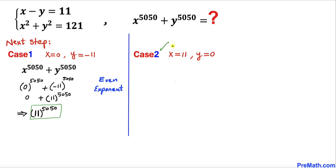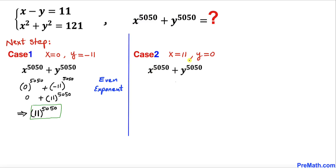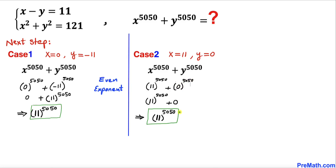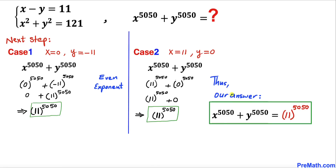Now for case 2, with x equals 11 and y equals 0, we find x to the power 5050 plus y to the power 5050 equals 11 to the power 5050 plus 0 to the power 5050, which equals 11 to the power 5050. The values are the same for both cases, so our final answer for x to the power 5050 plus y to the power 5050 is 11 to the power 5050.